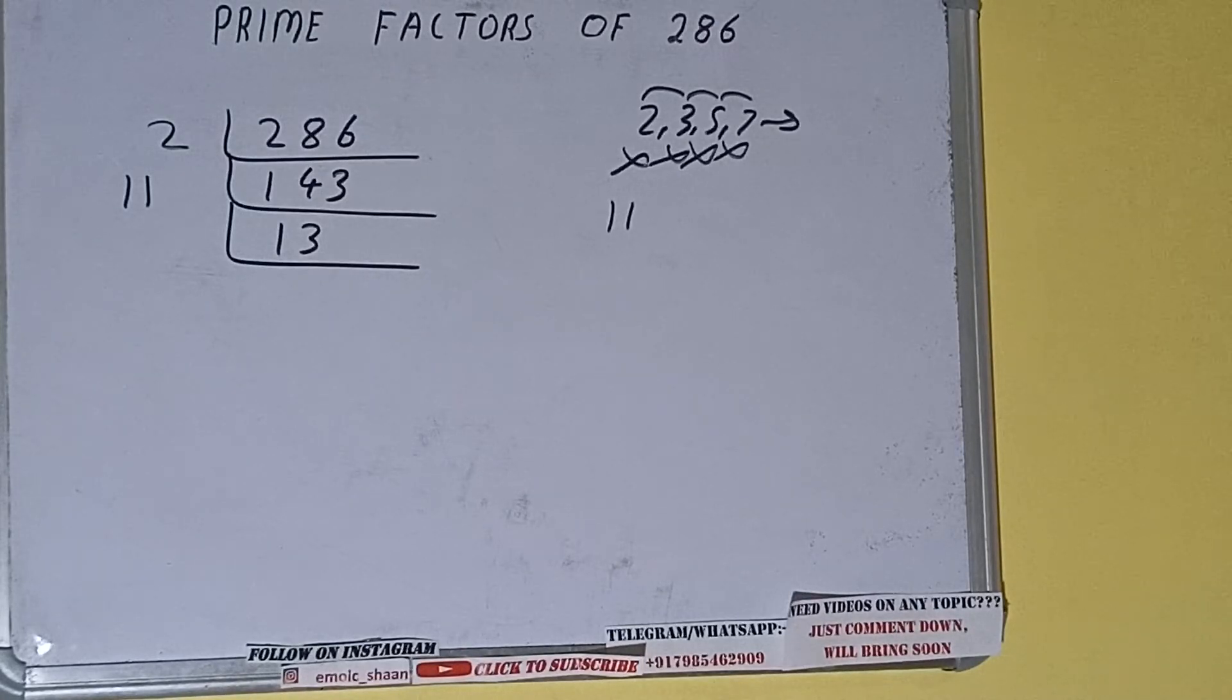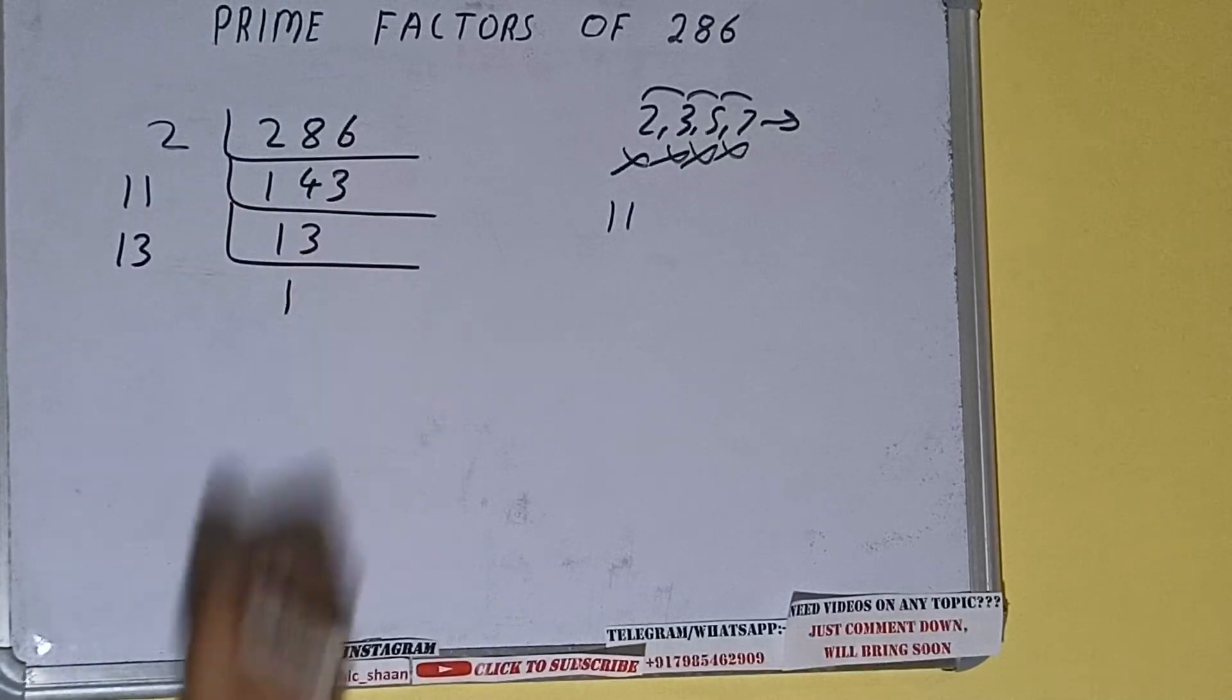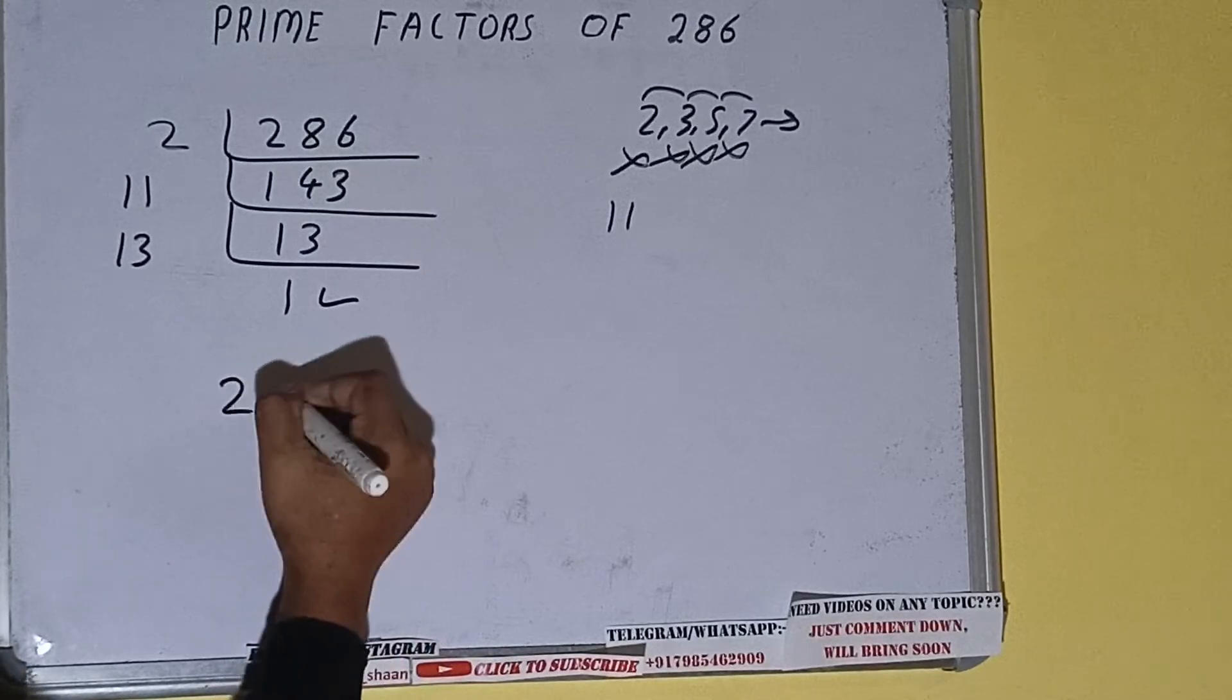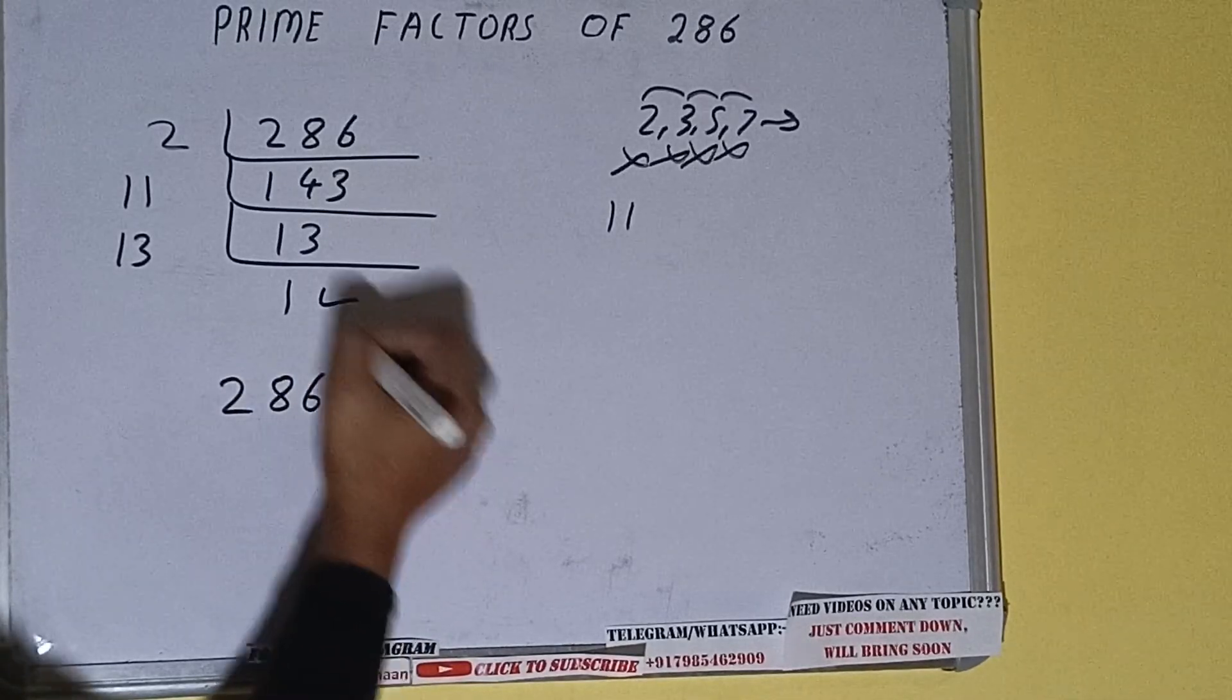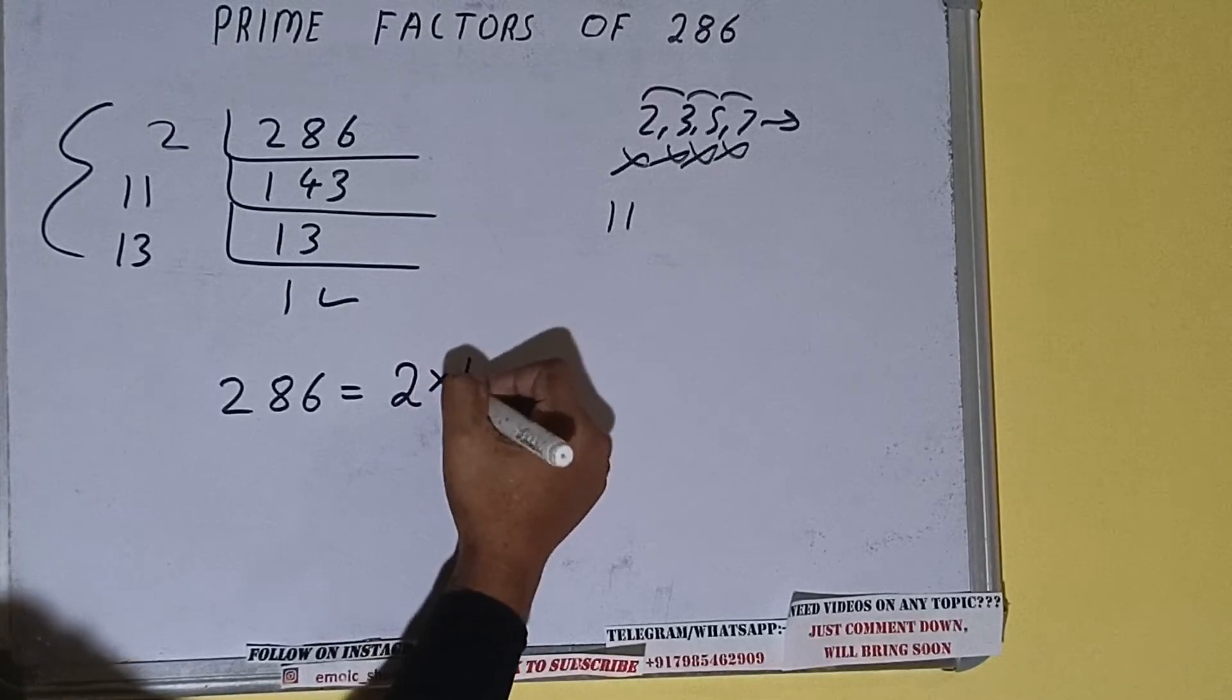Now 13 is further not divisible by 11 because 13 is itself a prime number, so it is only divisible by itself, that is 13. And once we do so, we'll be getting 1. Once we get 1, we need to stop and do one last thing: the prime factors of 286 will be whatever we have on the left-hand side, that is 2 × 11 × 13.